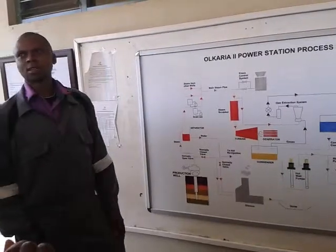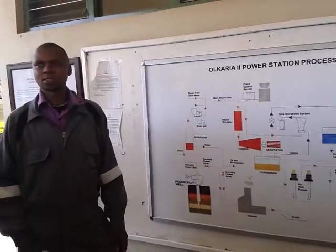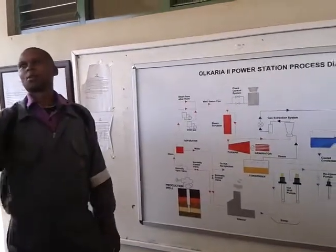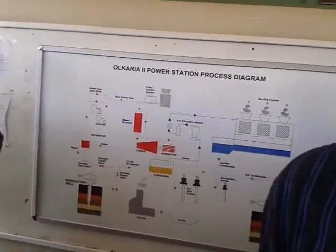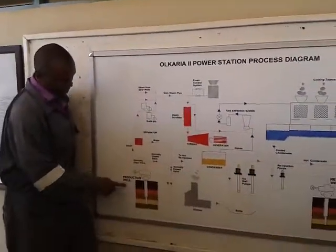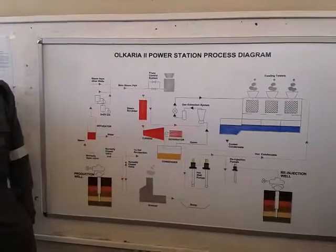Then they come with a drilling machine called a rig machine. A rig machine — it looks like a booster. Then they come and drill a production well. A production well has a depth of 2,000 to 3,000 meters.